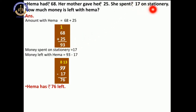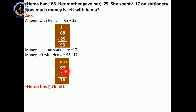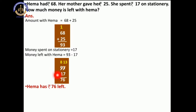Now she spent Rs. 17 on stationery. So money spent on stationery is equal to 17. We have to do subtraction. So 93 minus 17: 7 cannot be subtracted from 3, so cut 9 and write before number, then cut 3 and add 10. 10 plus 3 is equal to 13. Count 13 on your fingers and subtract 7 from 13, so we get 6. Now 8 minus 1 is equal to 7. Our answer is 76. So Hema has Rs. 76 left.